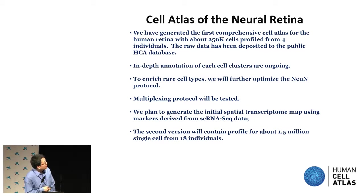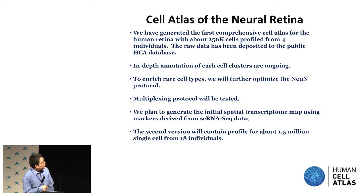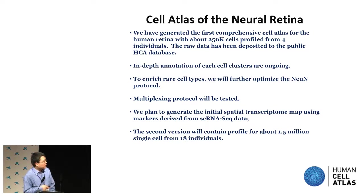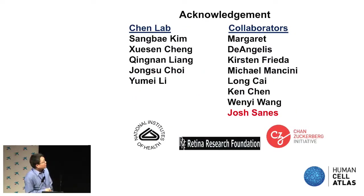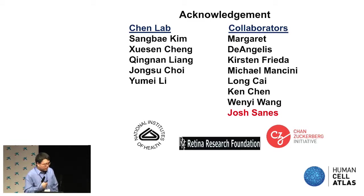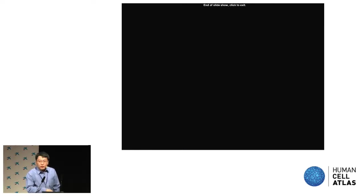We are still in the middle of in-depth annotation, and also trying to optimize the enrichment protocol further to capture extremely rare RGC types. We're thinking about multiplexing protocols to increase throughput. We also plan to generate initial spatial data using the markers identified so far. In the next version of single-cell work, we plan to expand to about 18 individuals with 1.5 million cells. Finally, I'd like to acknowledge the people who've done the work, the CZI iNetwork, and our close collaboration with Jiaxian, who leads the second eye group funded by CZI. Thank you.